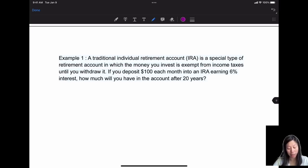A traditional individual retirement account, IRA, is a special type of retirement account in which the money you invest is exempt from income taxes until you withdraw it. If you deposit $100 each month into an IRA earning 6% interest, how much will you have in the account after 20 years? So this is what. Is this compound interest or annuity? Look, since you're going to deposit $100 each month into the IRA account, we know that this is going to be a recursive deposit. So that means we need to use annuity.